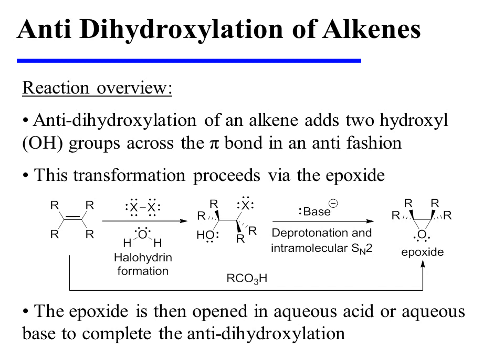there are two complementary ways to convert an alkene into an epoxide. In one method, a halohydrin is first formed by treating the alkene with bromine or chlorine in aqueous media. Then, treatment with base results in deprotonation and intramolecular SN2 reaction to form the epoxide. Alternatively, an alkene may be converted directly to an epoxide upon treatment with a peroxy acid.